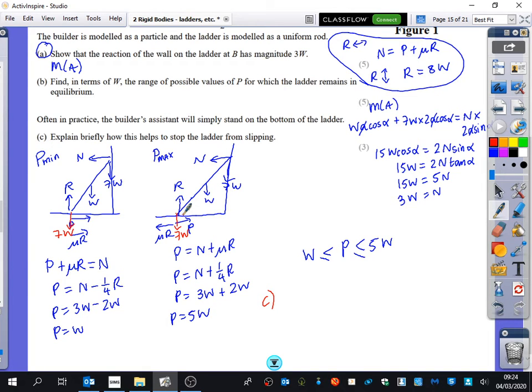Are there any forces that you think wouldn't change as a result of adding someone here? N would not change. Why would N not change? Because N, the normal of the surface of the wall. Yes. R is just from the ground. Yes. So this normal reaction here would not change.